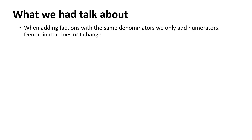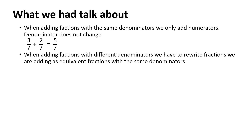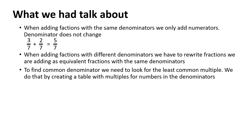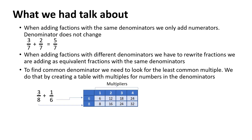Let's review what we talked about today. When adding fractions with the same denominator, we only add numerators and the denominator does not change. For example, 3 sevenths plus 2 sevenths equals 5 sevenths. When adding fractions with different denominators, we have to rewrite the fractions as equivalent fractions with the same denominator. To find the common denominator, we look for the least common multiple by creating a table of multiples. For example, to add 3 eighths and 1 sixth, the least common multiple for 6 and 8 is 24.